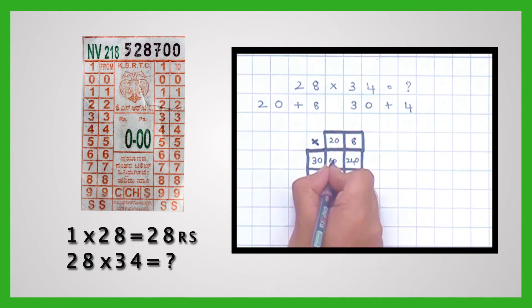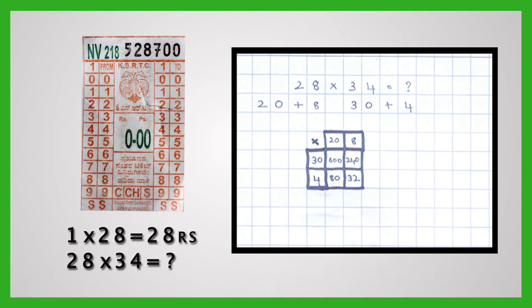A small tip will help your students with 20 multiplied by 30. First, write the two zeros in the answer. Then, 2 multiplied by 3 which is 6. So 20 multiplied by 30 is 600.